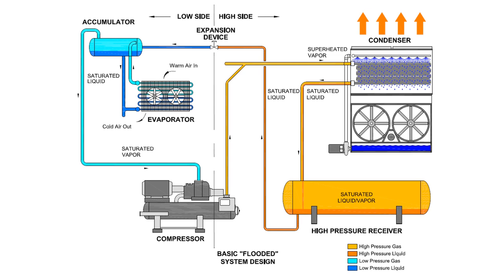The purpose of a high pressure receiver is to provide a safe location to add and store high pressure liquid ammonia in a refrigeration system. Typically, the high pressure receiver receives high pressure liquid from the condensers and supplies high pressure liquid to each zone of refrigeration and recirculator. The high pressure receiver is also used to provide storage for ammonia not being used in the system at any given moment. Under normal conditions, the high pressure receiver contains high pressure liquid and vapor ammonia.